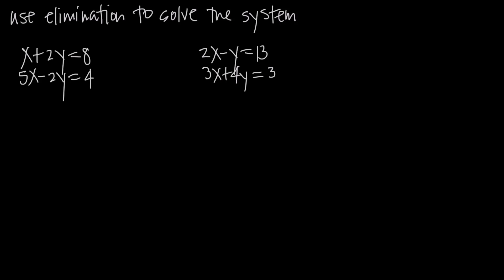In this video, we're talking about how to use elimination to solve a system of linear equations. There are three methods you can use to solve a system of linear equations: substitution, elimination, and graphing. Elimination means we're going to add our equations together or subtract them from one another to eliminate a variable so that we can solve for the other variable, and then use that solution to find the other variable.